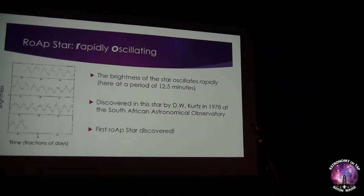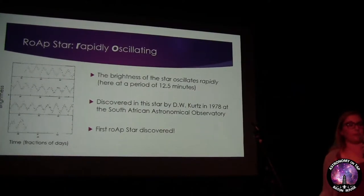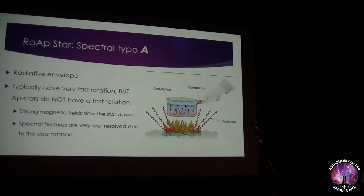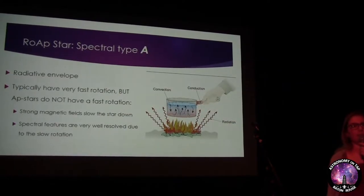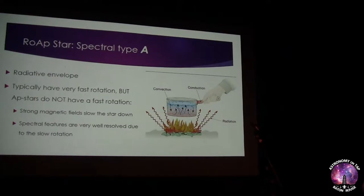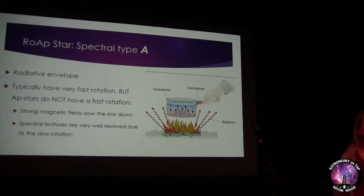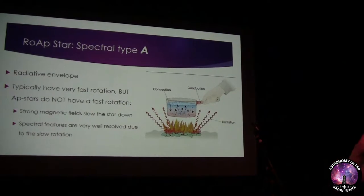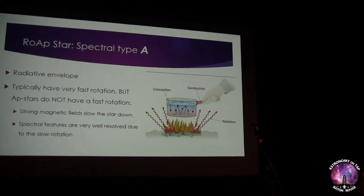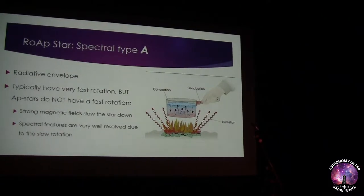This was also the first ROAP star ever discovered. The star is also spectral type A. What matters here is that this star conveys heat with radiation rather than convection — like water boiling in a pot. This means the material in the star isn't mixing up and moving around; it's kind of just staying where it is, which will come up later.